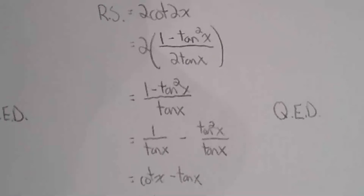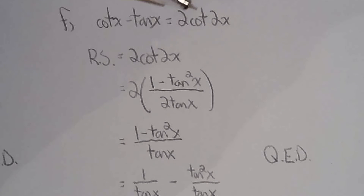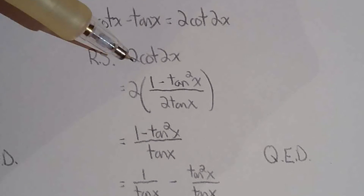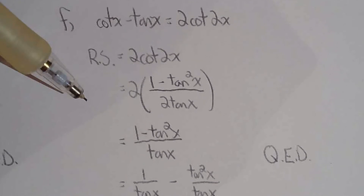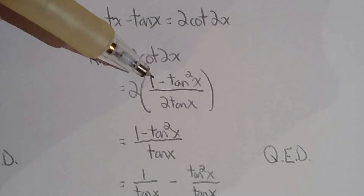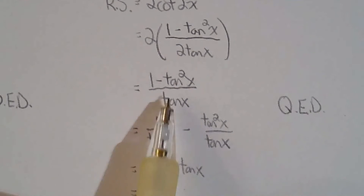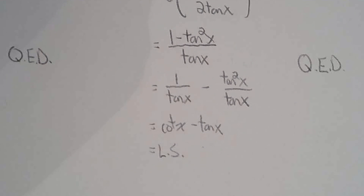For 15f, I chose to work with the right-hand side because I saw cotangent 2x. Cotangent 2x is the reciprocal of the double angle formula for tan: since tan 2x equals 2 tan x over 1 minus tan squared x, cotangent 2x is 1 minus tan squared x over 2 tan x. Then break that fraction into two terms to get cotangent x minus tan x.